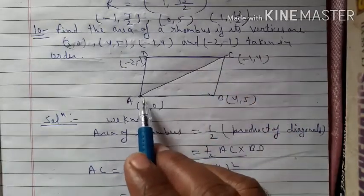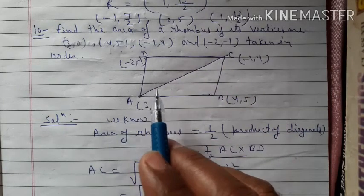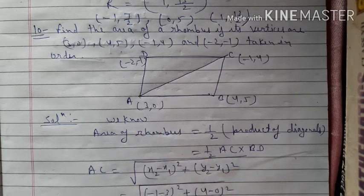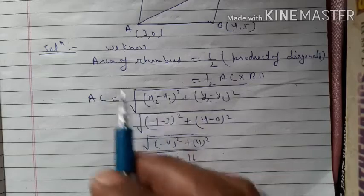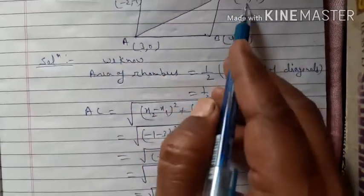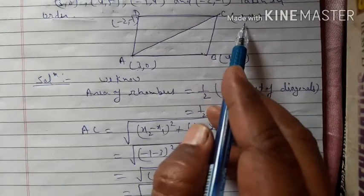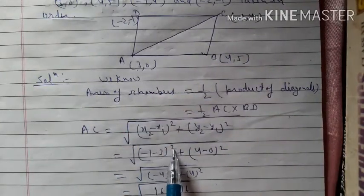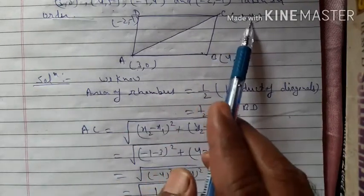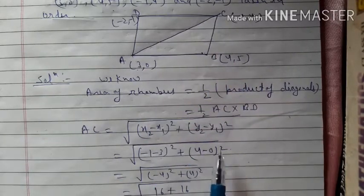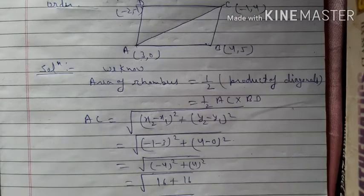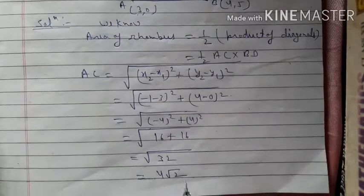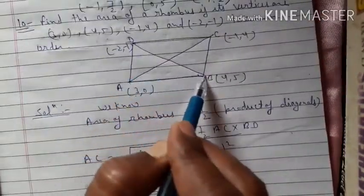For AC: distance formula gives √[(x2-x1)² + (y2-y1)²]. With A(3,0) as (x1,y1) and C(-1,4) as (x2,y2): AC = √[(-1-3)² + (4-0)²] = √[(-4)² + 4²] = √[16+16] = √32 = 4√2.